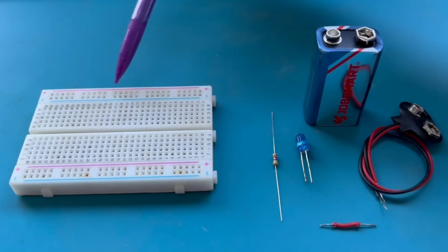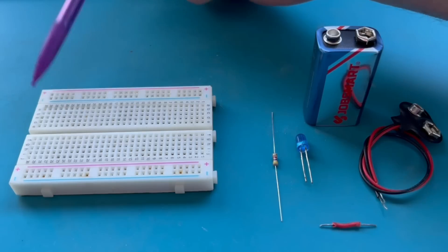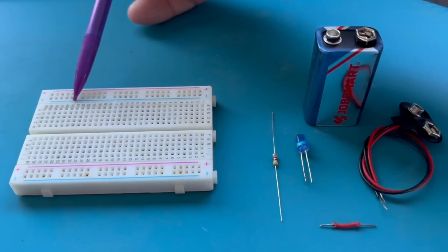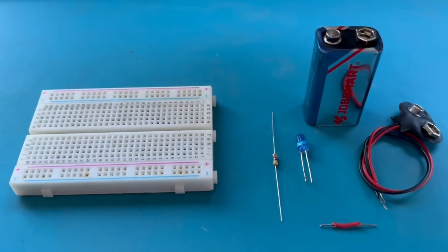So we have our standard small breadboard over here on the top. If we remember, we have the red or positive rail and the blue or negative rail. This is where we'll plug in the power.